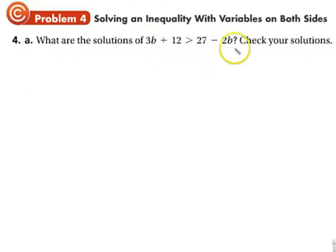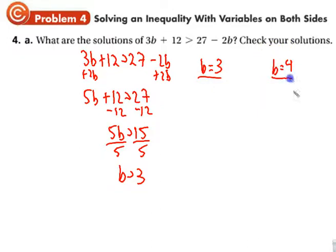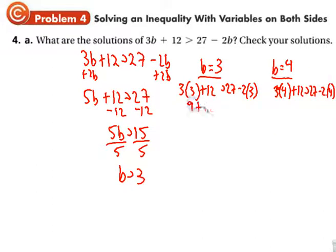Variables on both sides. We want to move the variables to one side, all the other numbers to the other. So I'm going to add 2b. Subtract 12. Divide by 5. It's positive, so we don't change anything. Pick numbers and I plug in.